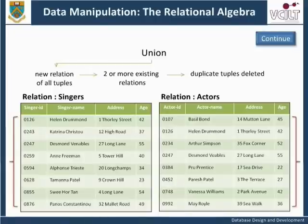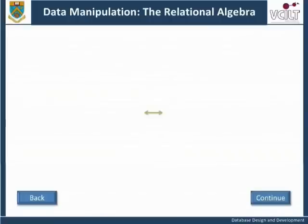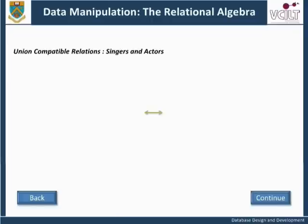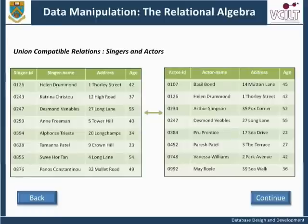This means that the two relations are union compatible. Note that it is not important whether the relations have the same number of tuples. The two relations, singers and actors, will be combined in order to produce a new relation, performers, which will include details of all singers and all actors. An individual who is a singer as well as an actor need only appear once in the new relation. The Union operation will unite these two.